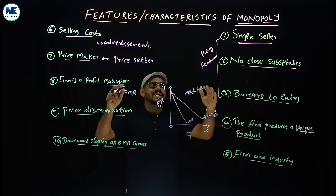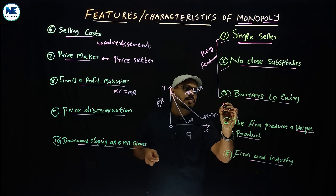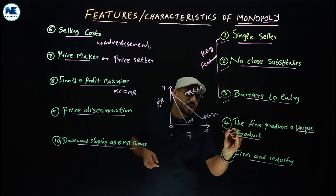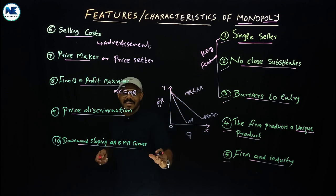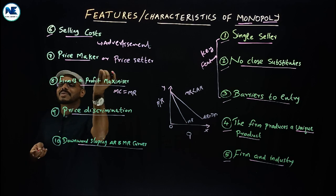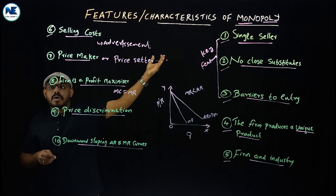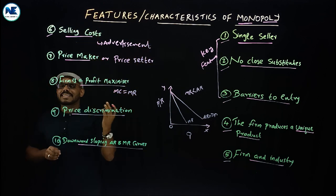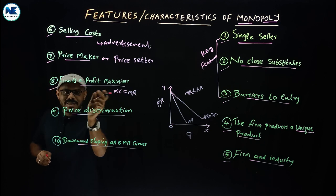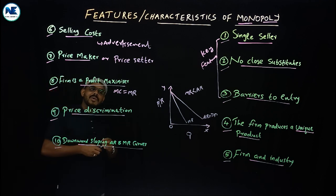To summarize the features or characteristics of monopoly — these 10 points are: single seller, no close substitutes, barriers to entry, unique product, firm equals industry, no selling cost or very meager selling cost — though in monopolistic competition selling cost is a crucial factor. Then, the firm is a price maker or price setter, profit maximizer, the practice of price discrimination, and downward sloping average revenue or demand curve and also marginal revenue curves. Add a proper introduction and conclusion on monopoly to complete your answer.